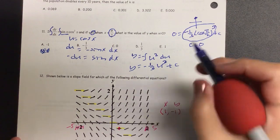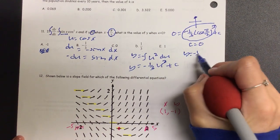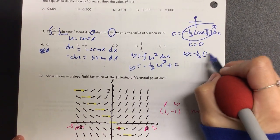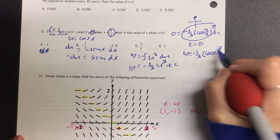So our particular solution is going to be y is equal to negative one third cosine of x cubed, because c was zero.